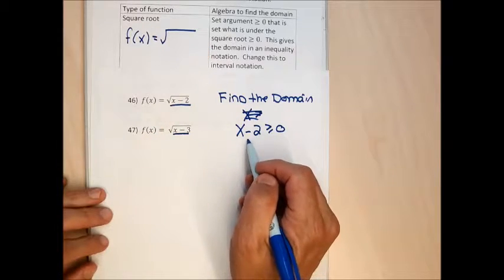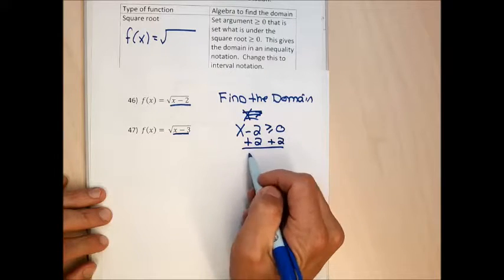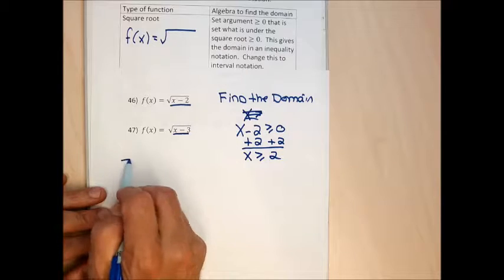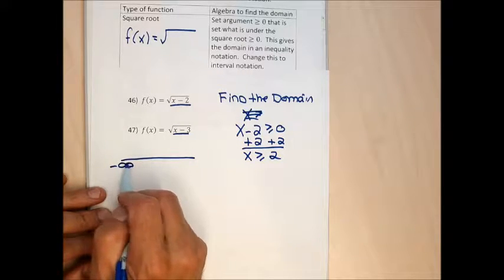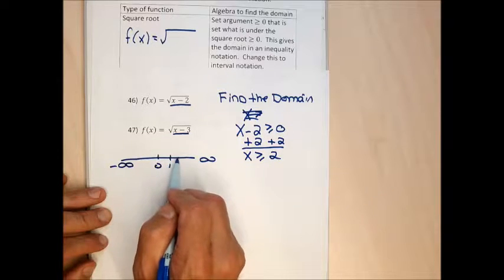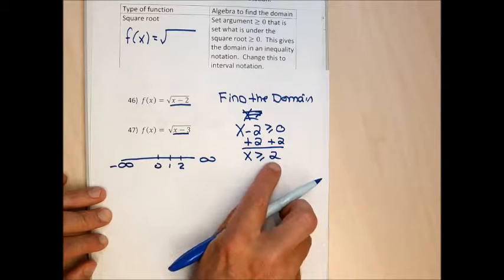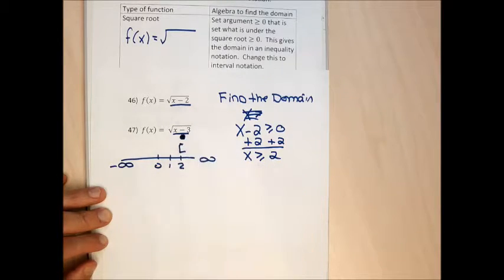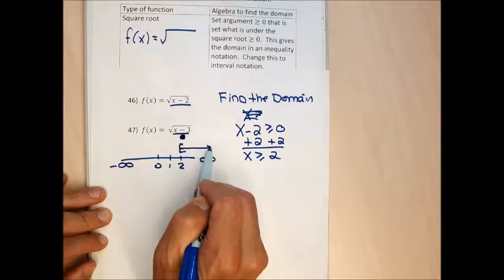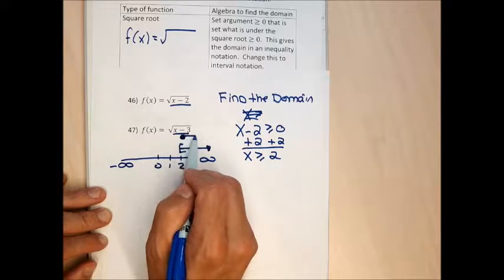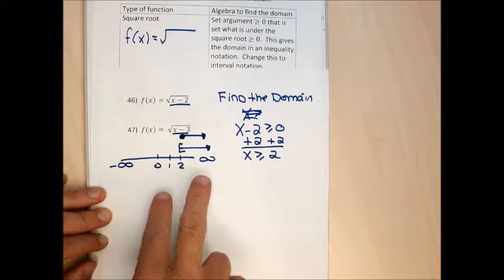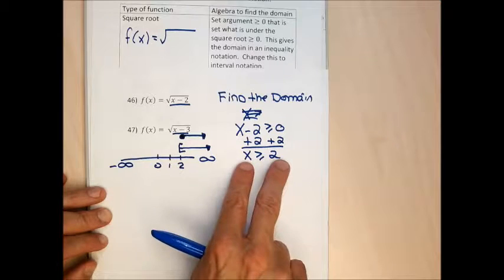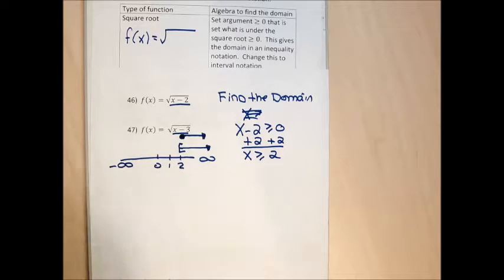This gives me the domain in inequality notation. But the instructions ask for interval notation, so I need to convert. On a number line with negative infinity on the far left and positive infinity on the far right, I mark out 2 — the beginning of the domain — with a square bracket or closed circle, and draw a line pointing toward infinity, since numbers to the right of 2 are greater than 2.